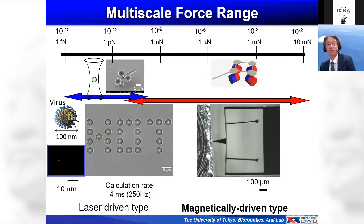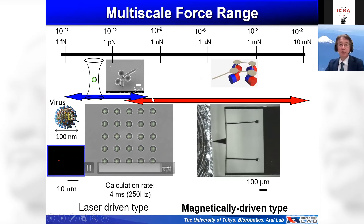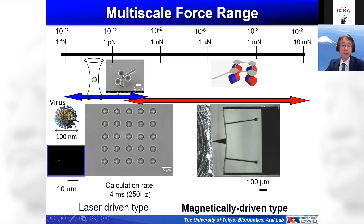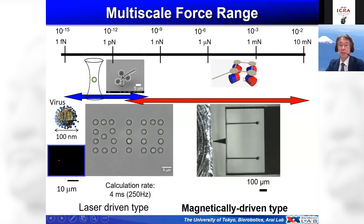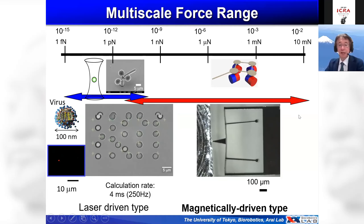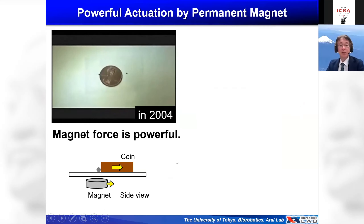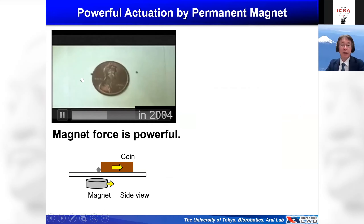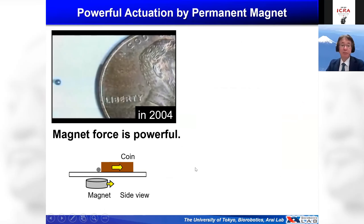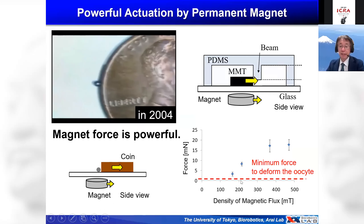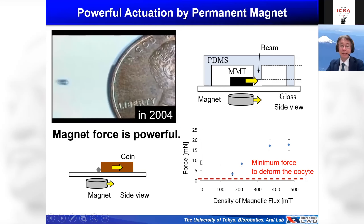Such applications used optical tweezers, but sometimes we need to apply more force. If we want to apply more than one micronewton order force, magnetic force is much more suitable. Using a permanent magnet with a magnetic flux around 200 millitesla, we can realize 10 micronewton force. This is very useful for non-contact manipulation. I'd like to talk more about powerful magnetic manipulation using permanent magnets.